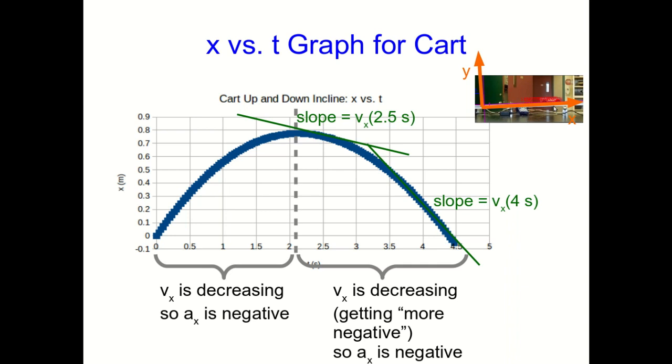So whether we're talking about when it's going up the ramp or when we're talking about when it's going down the ramp, the acceleration vector points back down the ramp in the negative x direction the whole time.